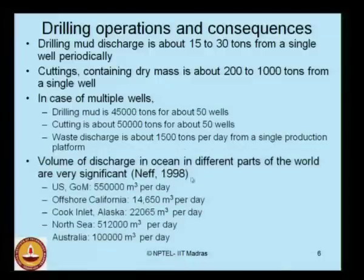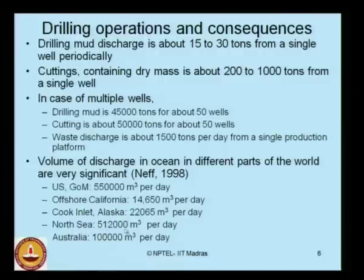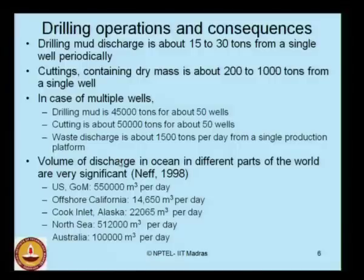The volume of discharge into the ocean in different parts of the world is discussed here. In the Gulf of Mexico, it is about 550,000 cubic meters per day. Offshore California, it is about 14,650 cubic meters per day. Cook Inlet Alaska discharges about 22,065 cubic meters per day. The North Sea value is substantially high at close to 512,000 cubic meters per day, and Australia discharges about 100,000 cubic meters per day.